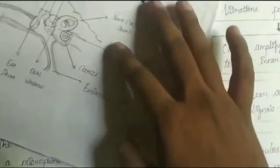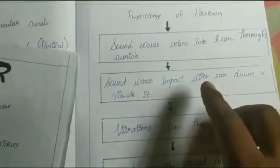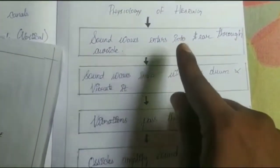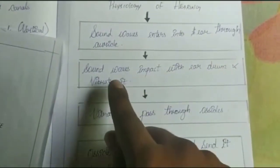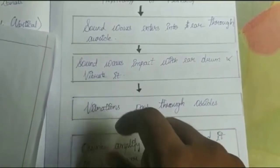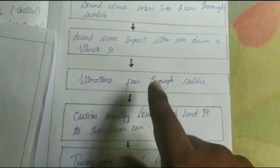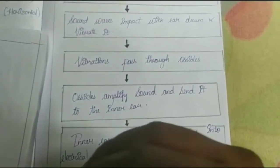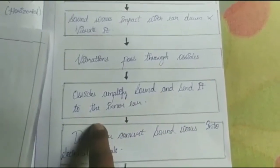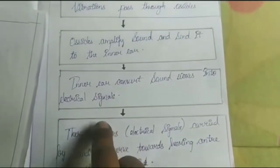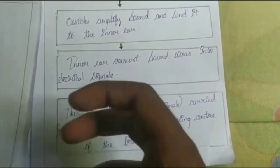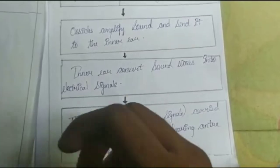Now, how does our hearing system work? The physiology of hearing: sound waves enter the ear and travel through the auditory canal, causing the ear drum to vibrate. This vibration passes through the ossicles to the inner ear, where sound waves are converted into electrical signals that travel to the brain, which then recognizes the sound.